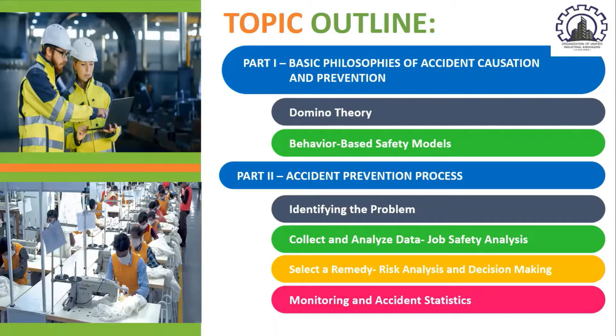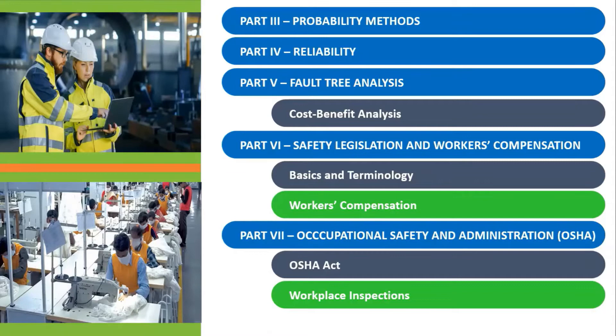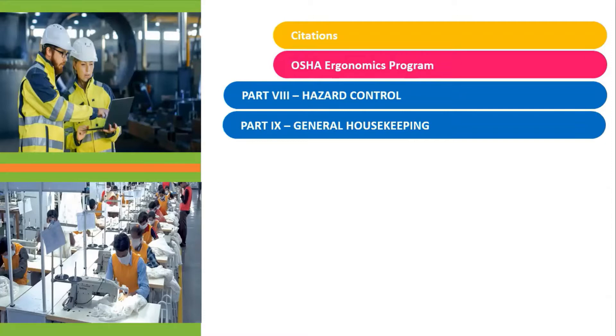Part 3 is about Probability Methods. Part 4 is Reliability. Part 5 is the Fault Tree Analysis, wherein Cost-Benefit Analysis will be discussed. Part 6 covers Safety Legislation and Workers' Compensation, including Basics and Terminology. Part 7 is Occupational Safety and Administration, or OSHA. Part 8 covers OSHA Act, Workplace Inspections, Citations, and the OSHA Ergonomics Program. Part 8 is Hazard Control. Part 9 is General Housekeeping.